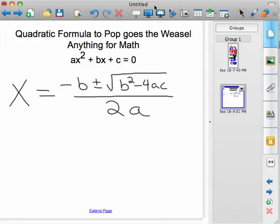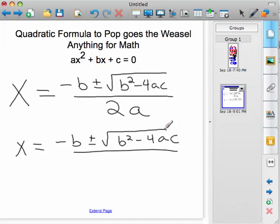Here you go. So x equals negative b plus or minus the square root of b squared minus 4ac all over 2a.